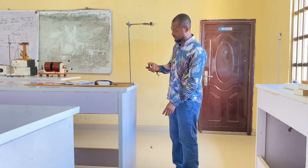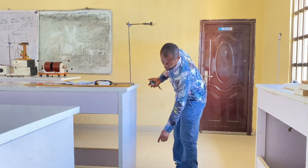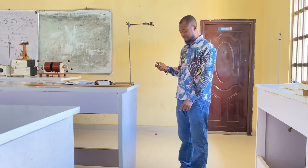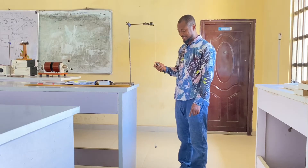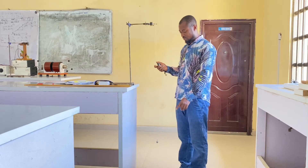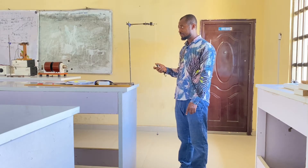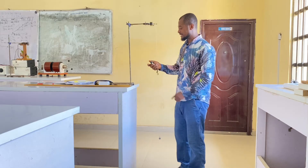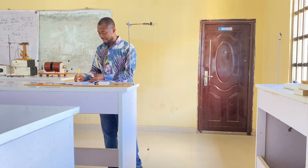I will now go back and repeat the same thing for T2. I allow the pendulum to go for some time and then start again, counting: 1, 2, 3, 4, 5... I stop and get 43.60 seconds. I record T2 as 43.60 seconds.